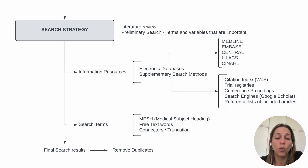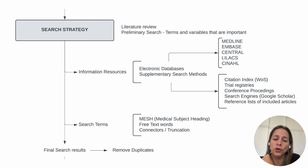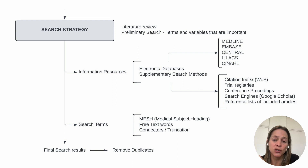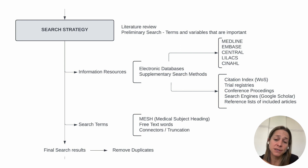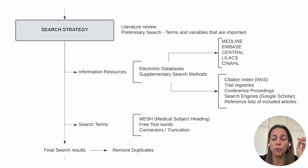Once you have decided your information resources, you also need to decide on the search terms. You need to include MeSH terms, which are medical subject headings, and also free text words. The reason is that MeSH terms are manually assigned in databases and very recent publications may not yet be assigned when you search, so you would miss them. There may also be mislabeling of MeSH terms, so you may miss an article. That's why you also need to look for free text words, and you need to use connectors and truncation appropriately.